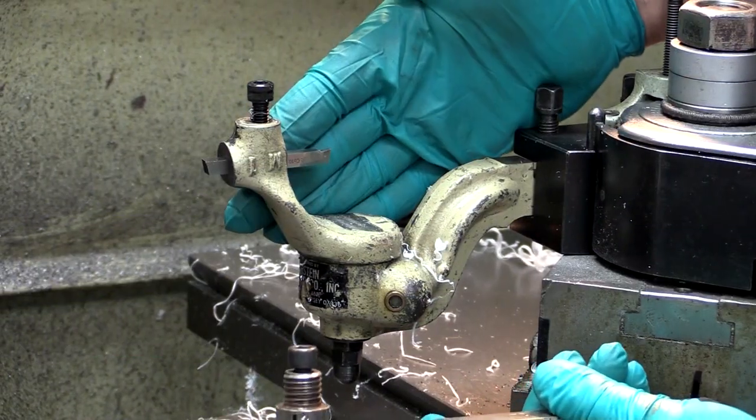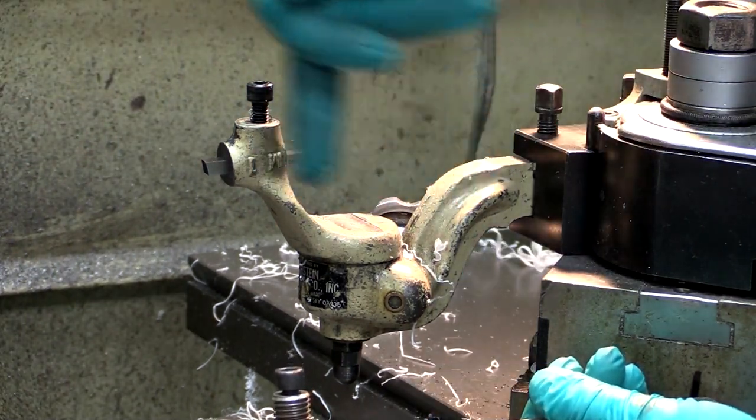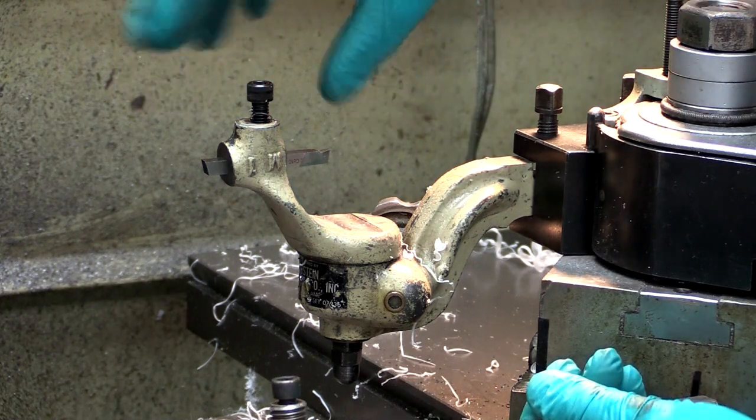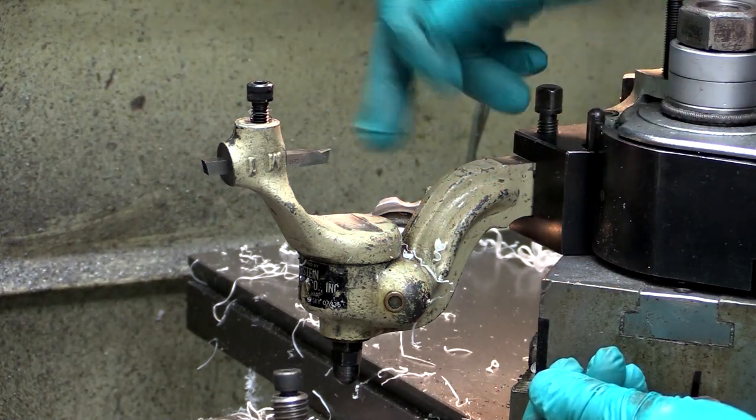So this tool right here that we just used to do this ball, you can picture how this is swinging on a radius. So using your math and measurement, you can actually adjust this to get the exact diameter that you need.